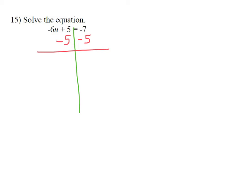On the left side, I'm left with just negative 6u because the 5s will cancel out. On the right side, I have to do the arithmetic. Negative 7 minus 5. Negative 7 minus 5 is negative 12.